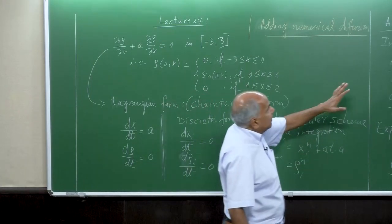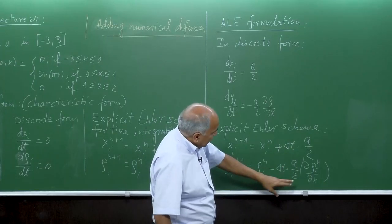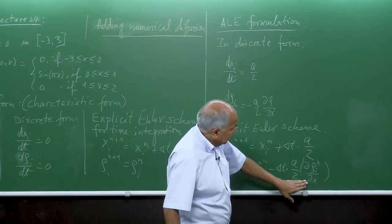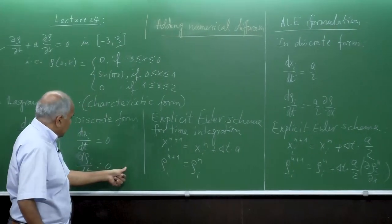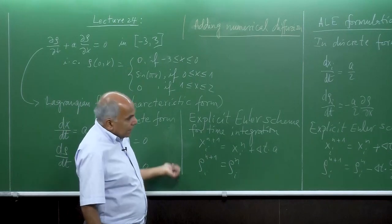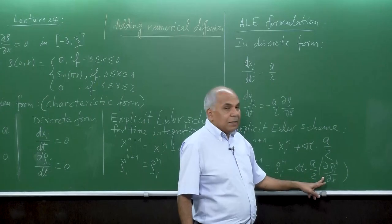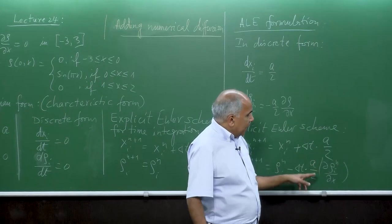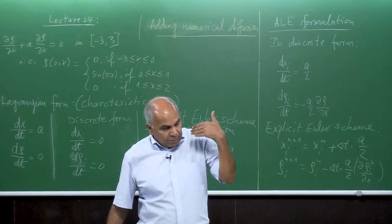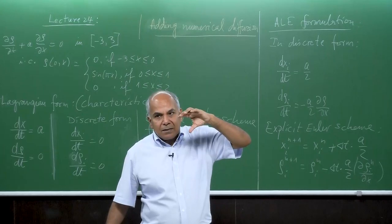Once we have the ALE formulation — arbitrary Lagrangian Eulerian formulation — we split the partial derivative into two parts, so on the right-hand side we get the partial derivative. In the fully Lagrangian form there is no partial derivative, so we do not have to do any numerical approximation. But in the ALE formulation on the right-hand side we have the partial derivative of rho. Since we have done it in first order, the first order approximation has a larger error than second order.